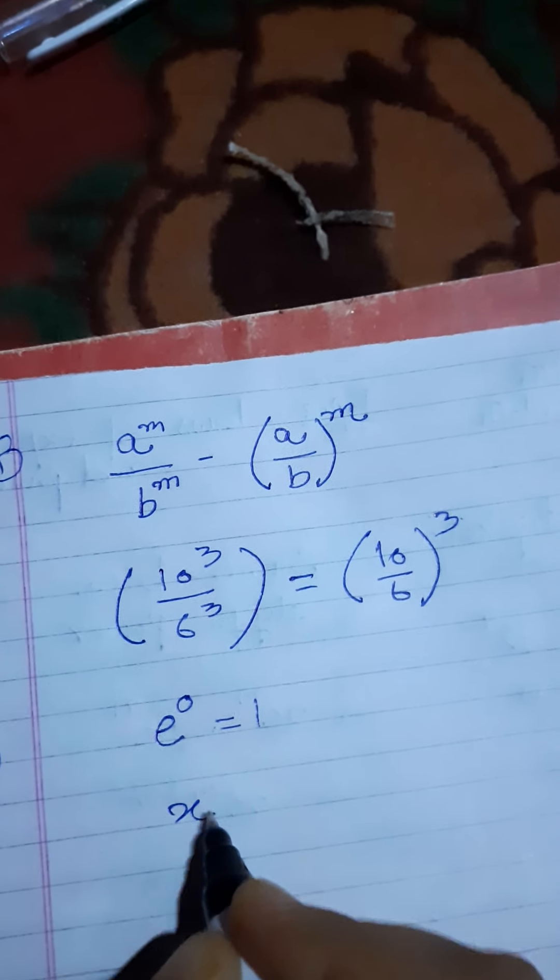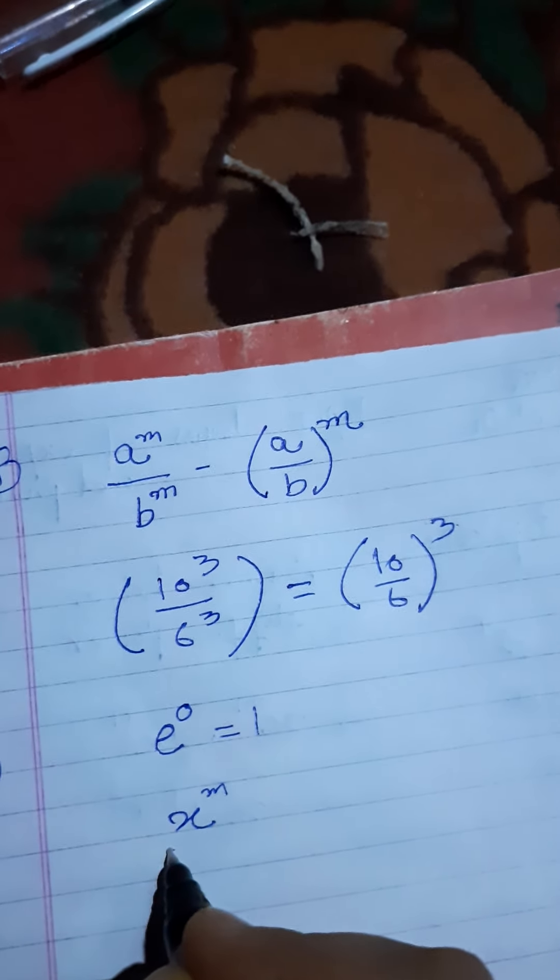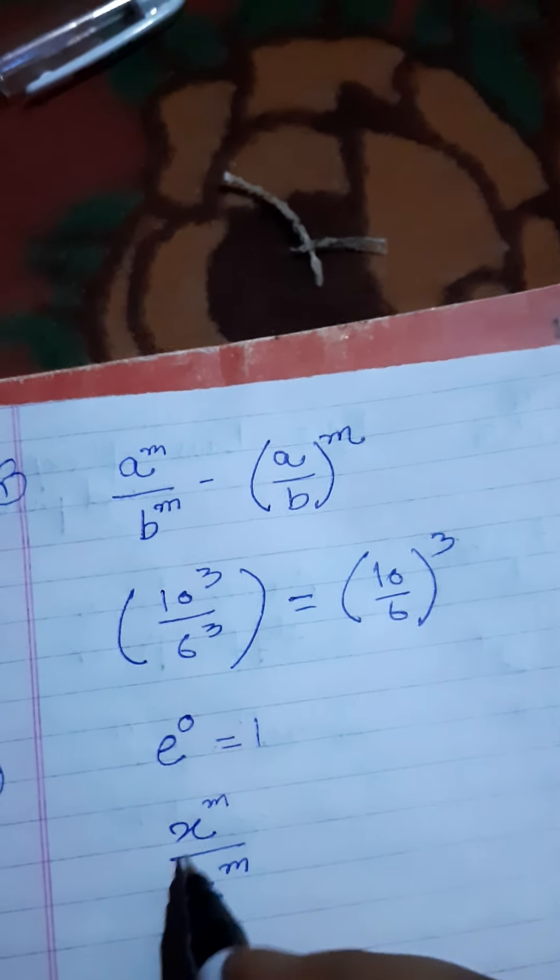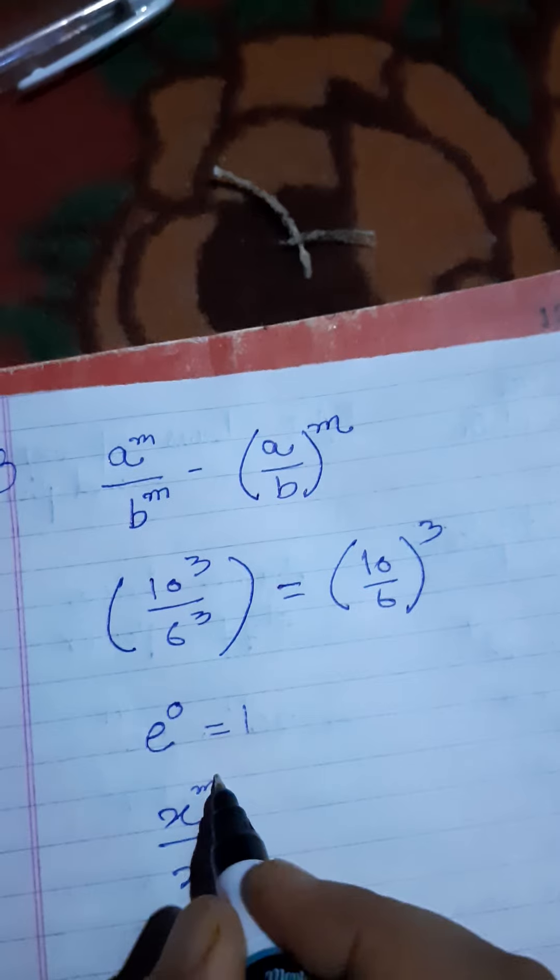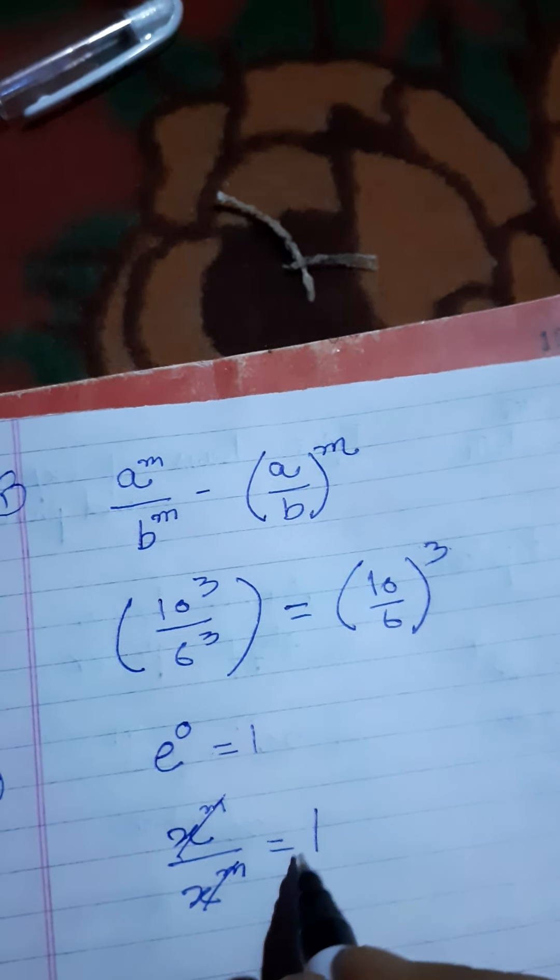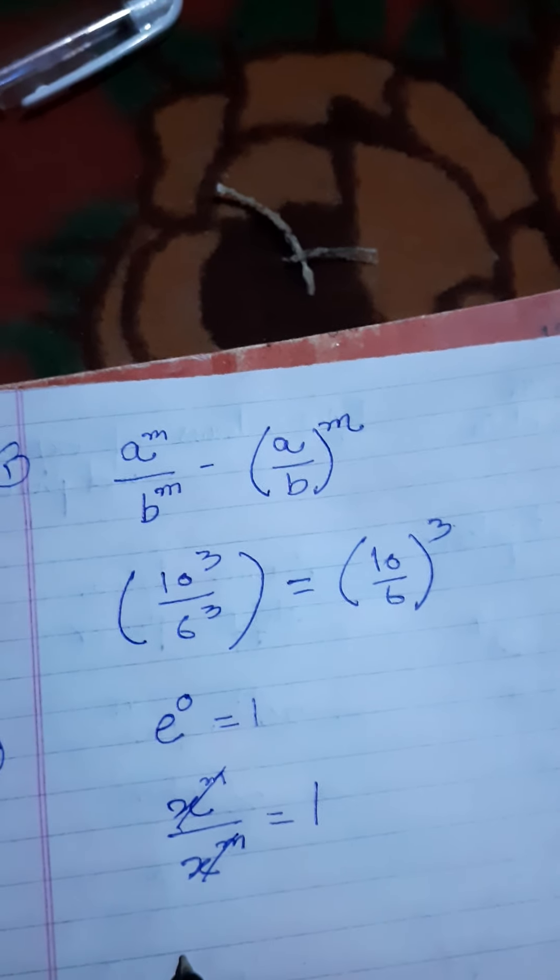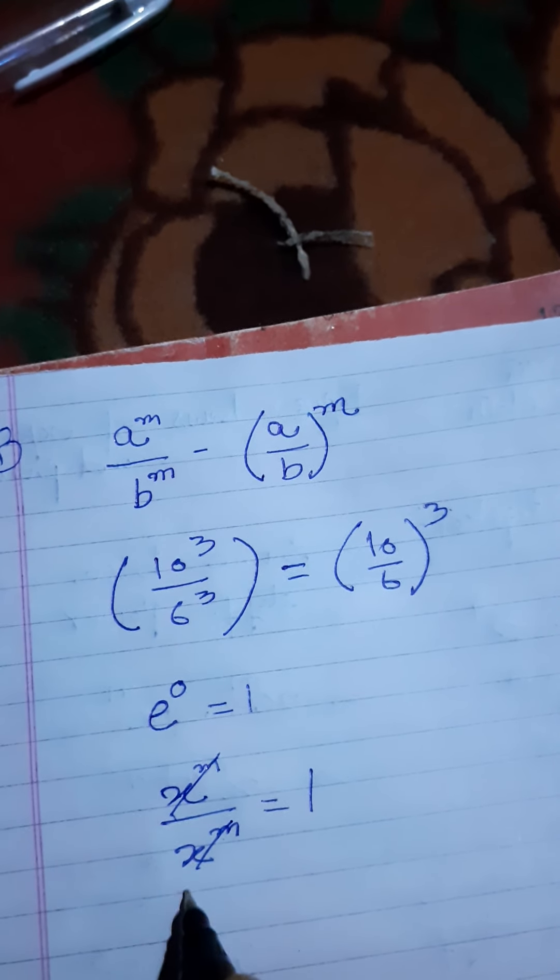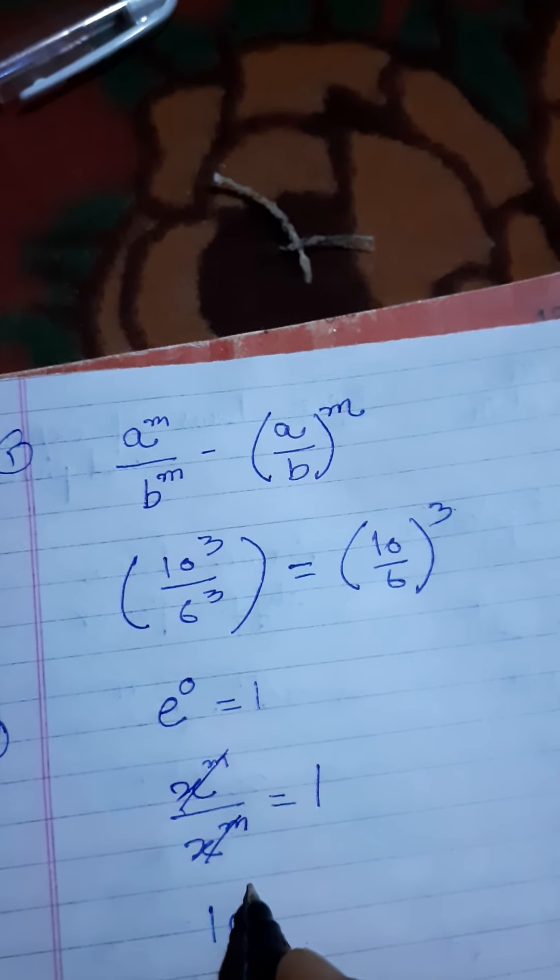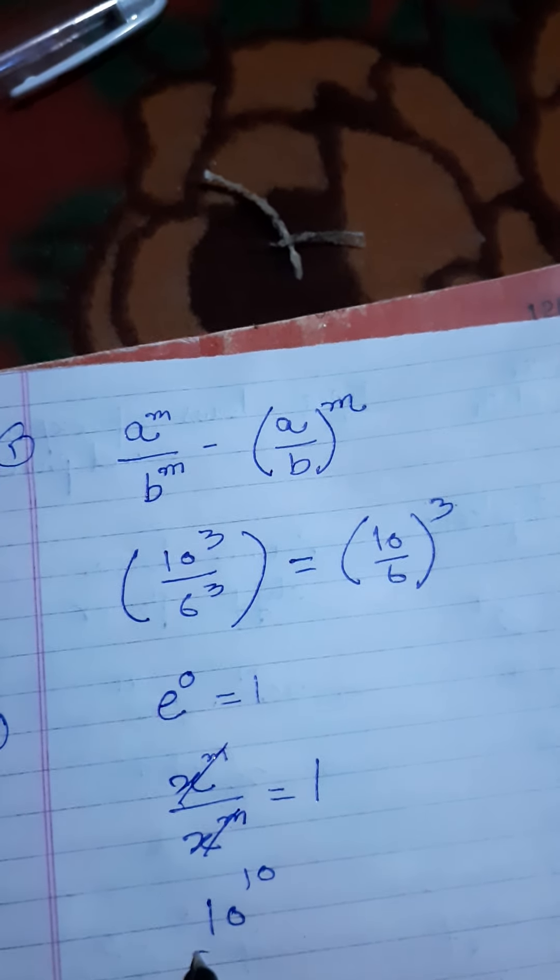For example, x raised to power m divided by x raised to power m. These two are the same, xm divided by xm, they cancel out and we get one.